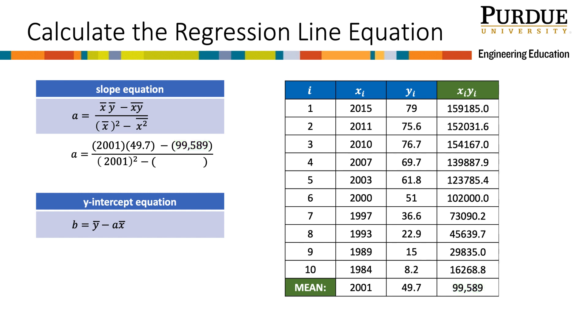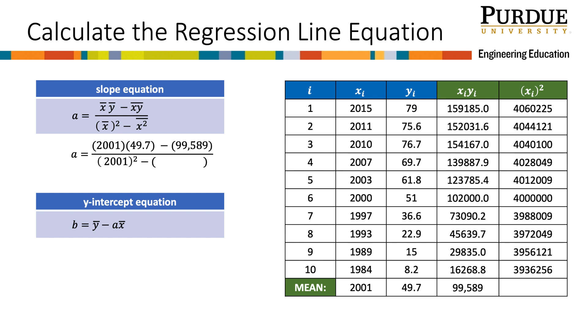Finally, I need to calculate all of the x squareds, so I will make a column for these. If I calculate the first point, I see that 2015 squared is 4,060,225. I can repeat the squaring for all the rest of the data points. Now I need to take the mean of this column and I get 4,003,694. That value goes here.